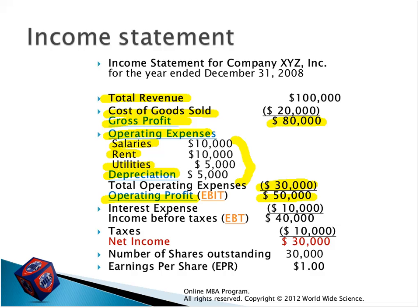After operating profit, we have to pay interest expenses — the commissions on credit we pay for borrowing from banks — and deduct it from operating profit to get income before taxes, which is 40,000 — also called EBT. After making the payment for interest, we calculate income tax — equal to 10,000 — and deduct it from income before taxes. We get net income, which equals 30,000. This is the income the company generated from the business.